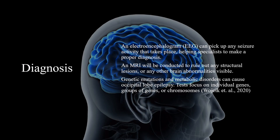An electroencephalogram can pick up any seizure activity that takes place, helping specialists to make a proper diagnosis. An MRI will be conducted to rule out any structural lesions or other brain abnormalities. Genetic mutations and metabolic disorders can cause occipital lobe epilepsy. Tests focus on individual genes, groups of genes, or chromosomes.